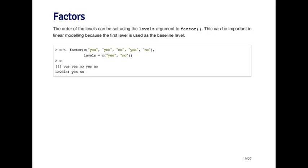Now when I print out the x object, you see that the elements are still the same. It's still yes, yes, no, yes, no. But the levels attribute is reversed because yes is the first level and no is the second level.